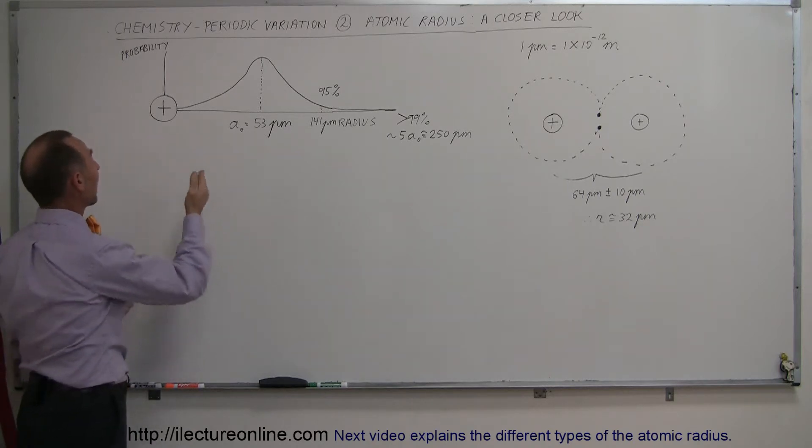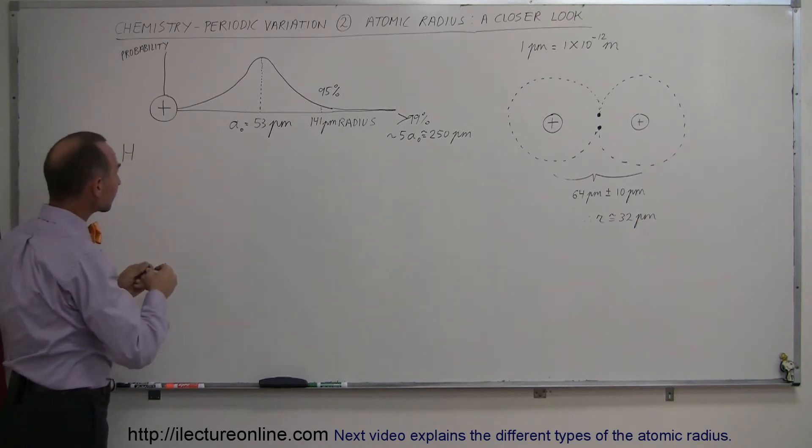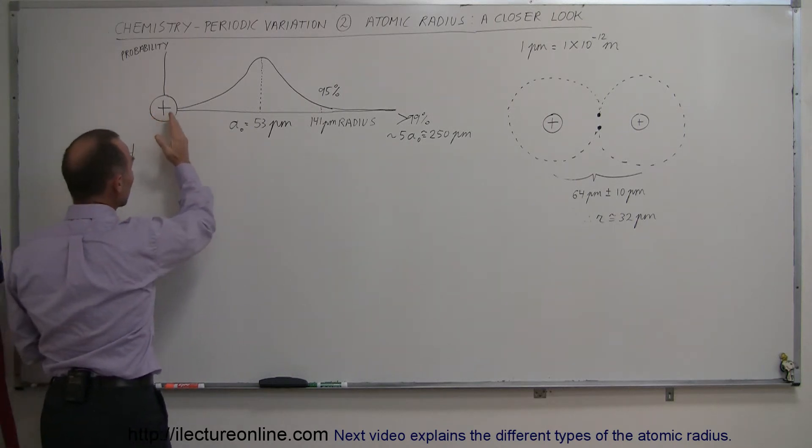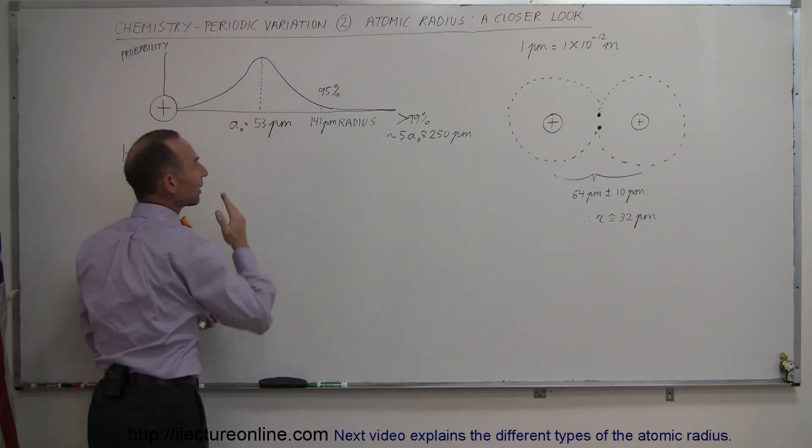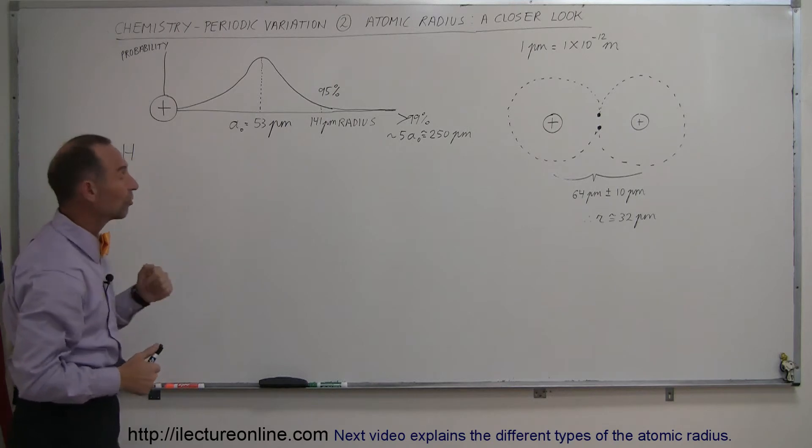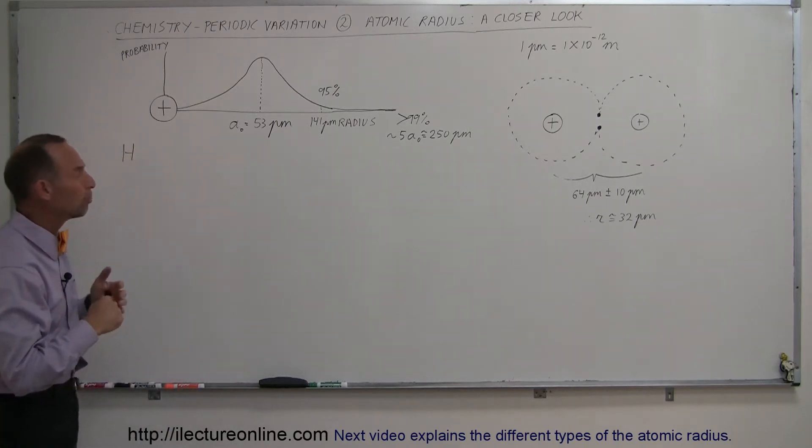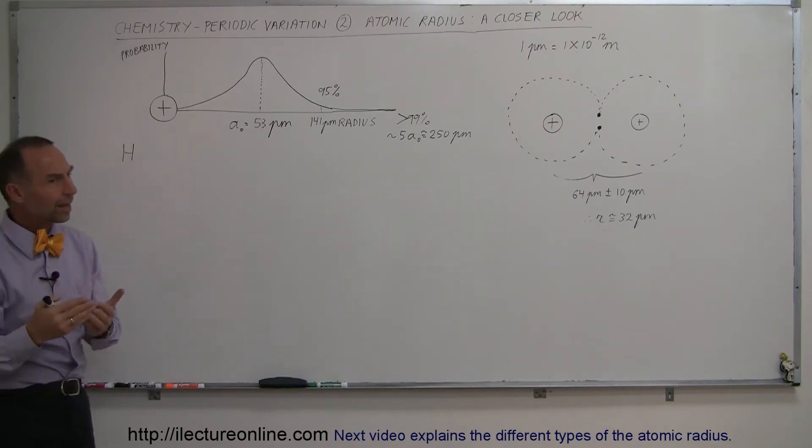And we noticed, for example, in the hydrogen atom, we have the nucleus and where the electron is most likely to be found, and the highest probability of where the electron could be found was at 53 picometers away from the nucleus, which is then known as the Bohr radius. That's known as the radius of the hydrogen atom.